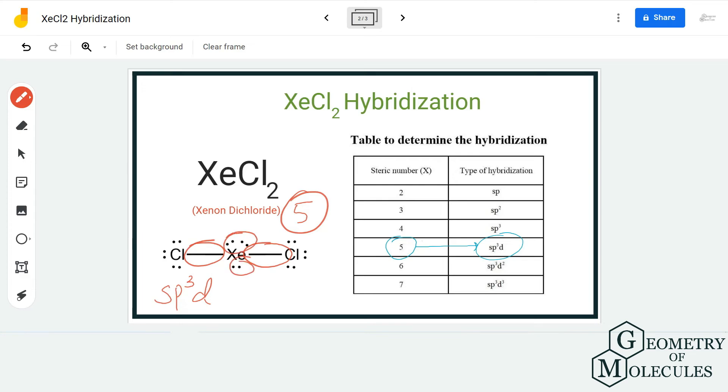The central atom needs to form hybrid orbitals to accommodate all the pairs of electrons that are around it, whether they are bonding pairs of electrons or non-bonding pairs of electrons. This is the most convenient way to find out the hybridization of XeCl2.